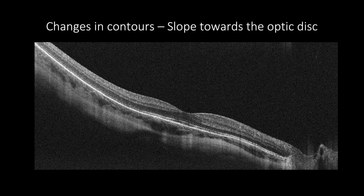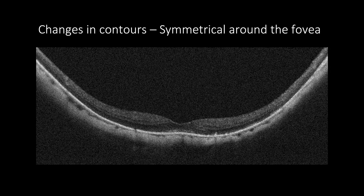Changes in retinal contours are one of the most common features in pathological myopia, showing several patterns, such as straight sclera with curvature slope toward the optic nerve, or concave shapes symmetrical on both sides where the sclera curves posteriorly and symmetrically around the fovea, which appears more posteriorly curved in cases of staphyloma.